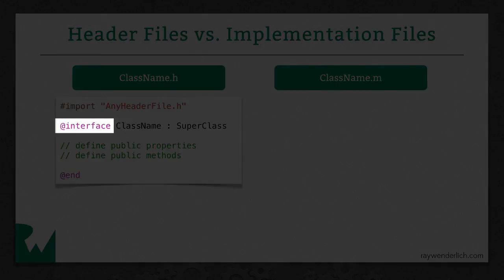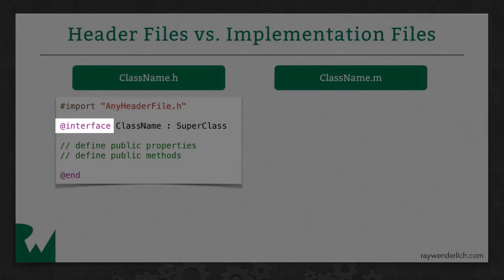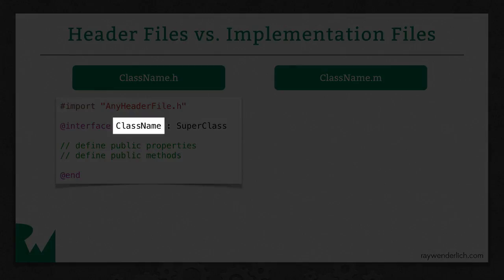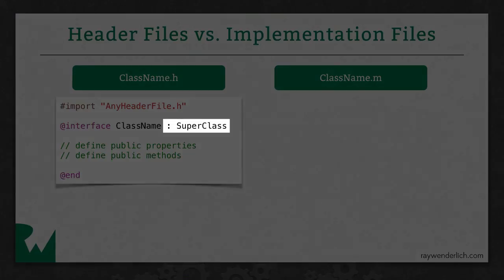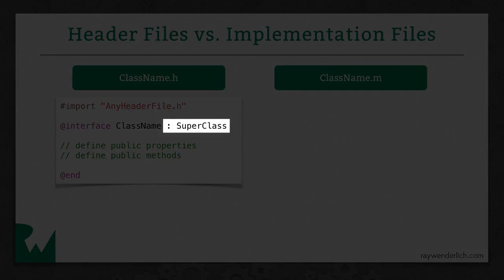Next, you use the @interface keyword. That's pretty much saying, hey, I'm creating a class here. And then you pass in whatever you want to name the class, and then you put a colon, and then you put whatever its superclass is. In Objective-C, you always have to derive from something. And if there's nothing in particular that you want to derive from, then you could derive from NSObject, which is the base class in Objective-C.